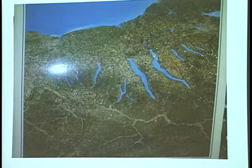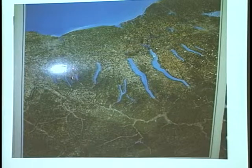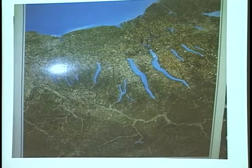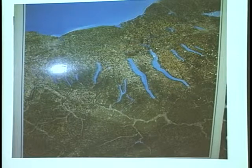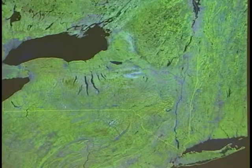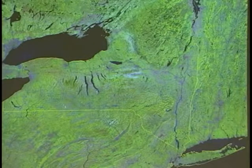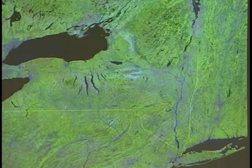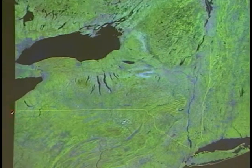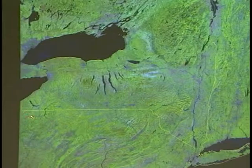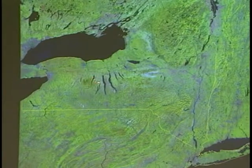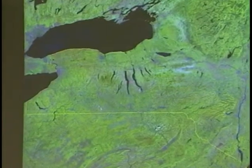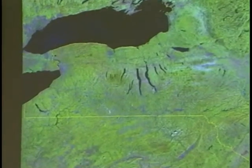Canandaigua Lake, Honeoye Lake, Hemlock Lakes, and Conesus Lake — those are the lakes that comprise the Finger Lakes region. Here's Chautauqua Lake down in the southwest corner of New York State, and we are presently right here. Here's Canandaigua Lake up here in central New York. So this gives you an idea of where we're located with regards to your region.